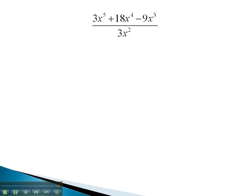We are now ready to try dividing a polynomial by a monomial using long division. We put the 3x squared out front, and we're gonna divide into the polynomial 3x to the 5th plus 18x to the 4th minus 9x cubed.